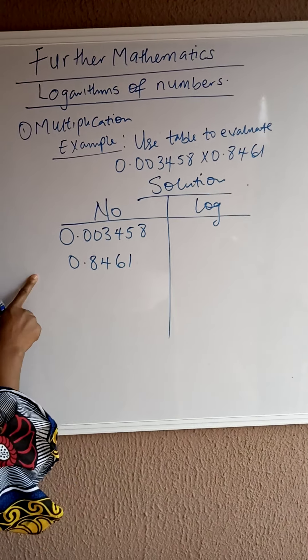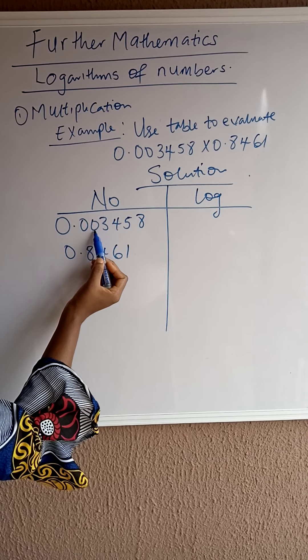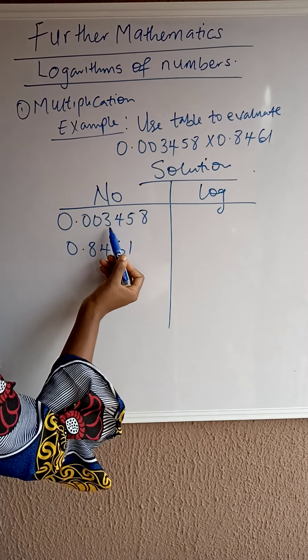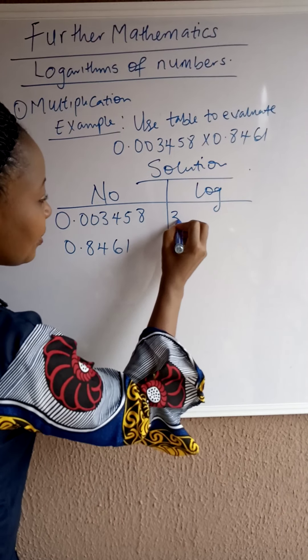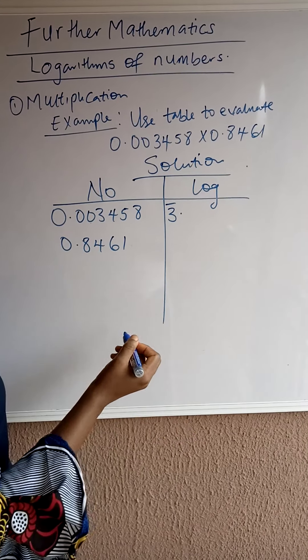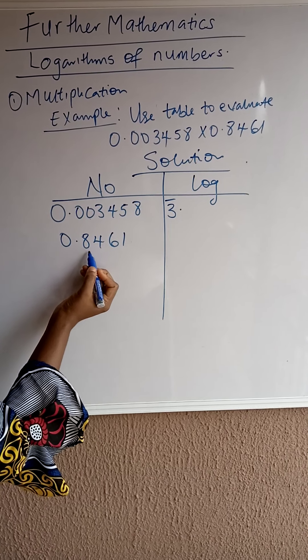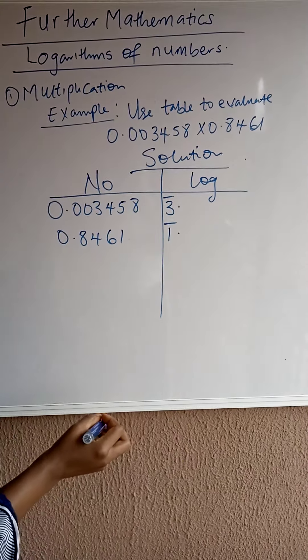In this equation, we are giving 0.00. The 0 before the 3 is 3.0, so it's going to be bar 3. That's like a negative 3. Then, we are having 0 before the 8 here. It's going to give us bar 1.